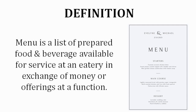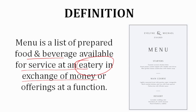In the definition, we have a very simple definition. Menu is a list of prepared food and beverage available for service at an eatery. Eatery is a combined word for restaurants, lounge, cafe, bar — everything is included. So anywhere at these places, a list of prepared food and beverage items is available for sale in exchange of money.